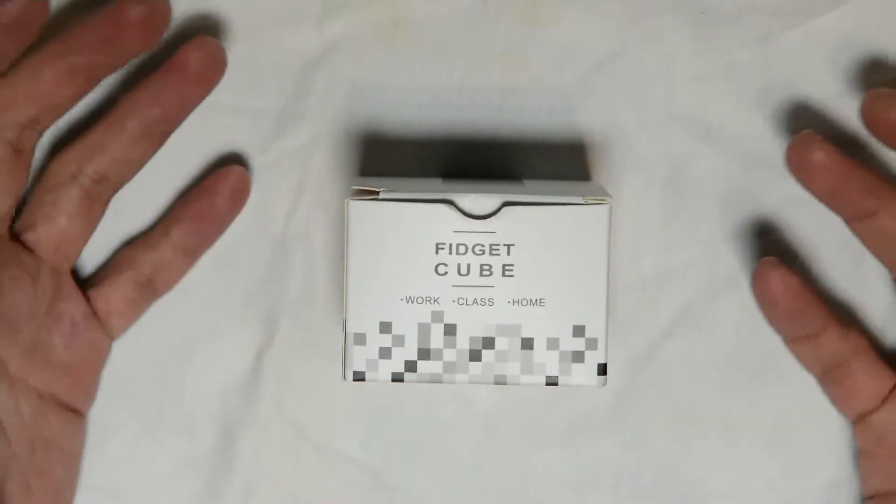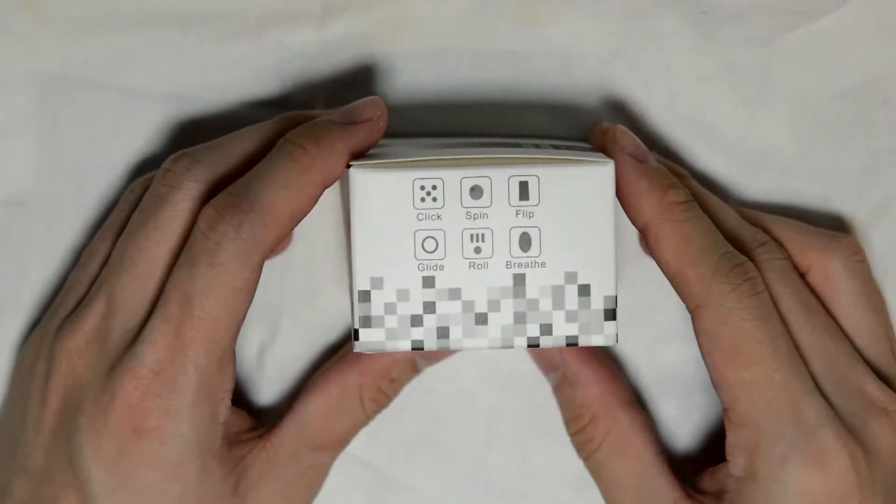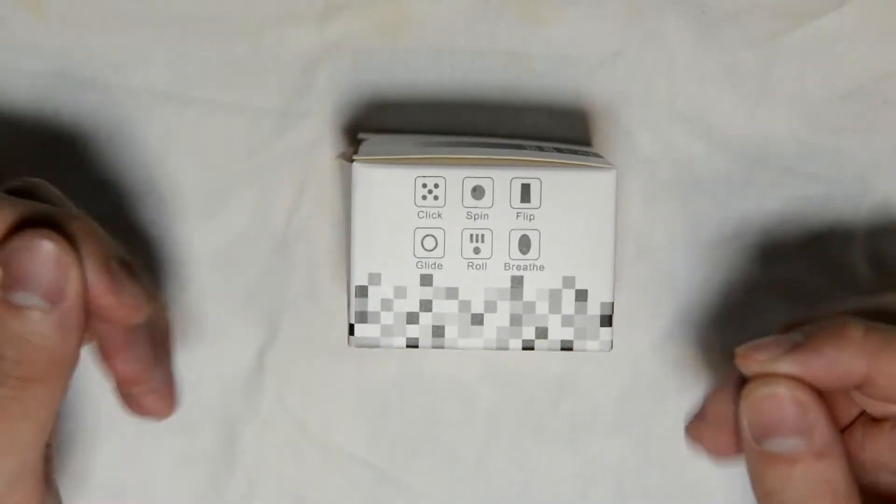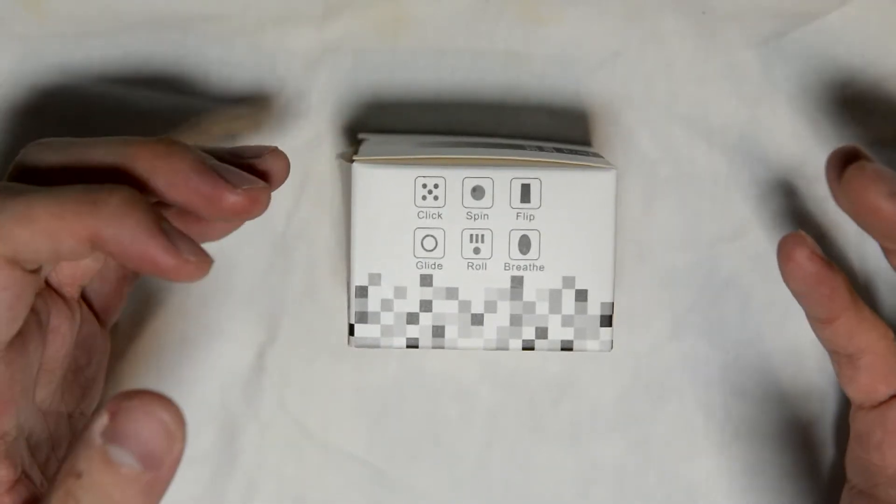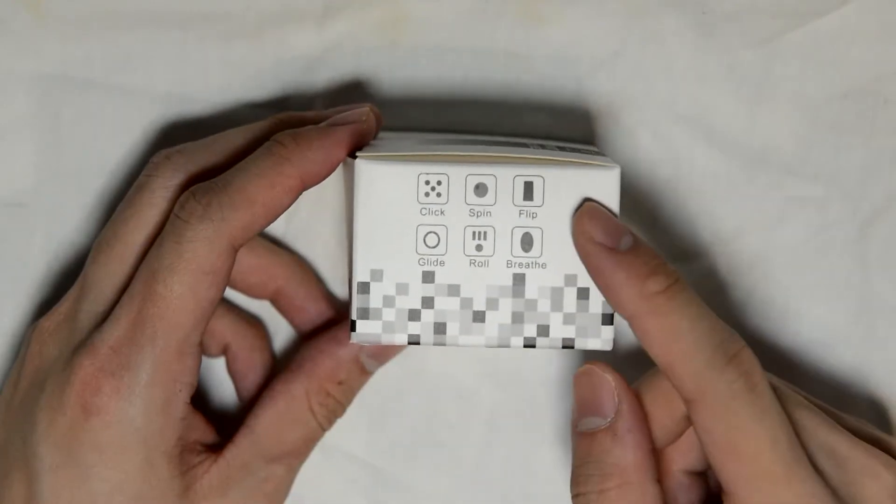In terms of quality of this, we're going to check it out and see how it is. But otherwise, you can see here, this is actually a cube that is meant for people who cannot stop fidgeting or they have to do something with their hands. So you have different things here, which we'll look through later.